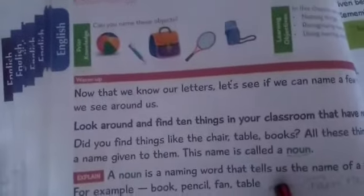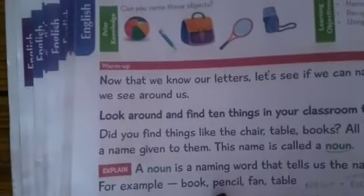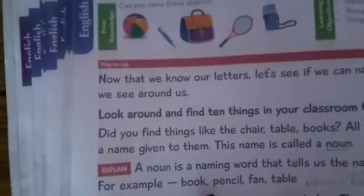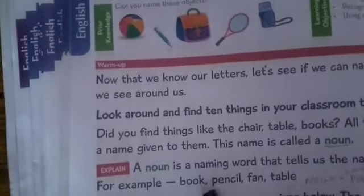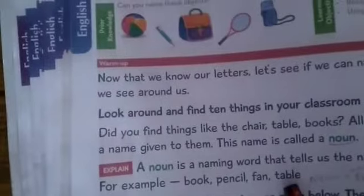For example, noun. What do you mean by noun? Noun is a naming word that tells us the name of a thing. For example, book, pencil, fan and table. These are all called nouns. Book — this is a thing's name. Nouns means a naming word that tells us the name of a thing. It is called noun.